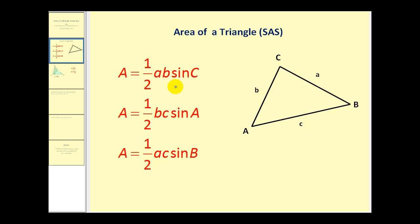There are three formulas involving sine that allow us to find the area of a triangle. Remember that the relationship among the sides and the angles are as follows: side A must be opposite angle A, side B must be opposite angle B, and side C must be opposite angle C.